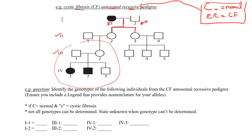For this autosomal recessive example: capital C = normal, two little c's = CF. When filling in genotypes, any unaffected individual must have at least one capital C — I'll put a line for the unknown second allele. Any affected individual must have two little c's. You can fill in a lot of this information right away once you know the mode of inheritance and apply the notation.